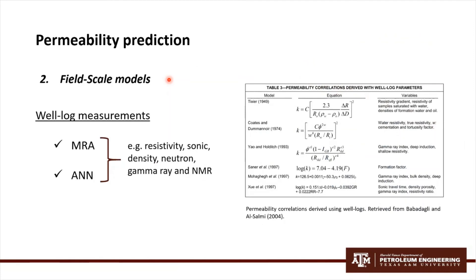Field scale models can be used for permeability estimations. One of the most common practices is to use well-log measurements. The more frequent techniques used in well-log data are MRI, multiple regression analysis, and ANN, artificial neural network.